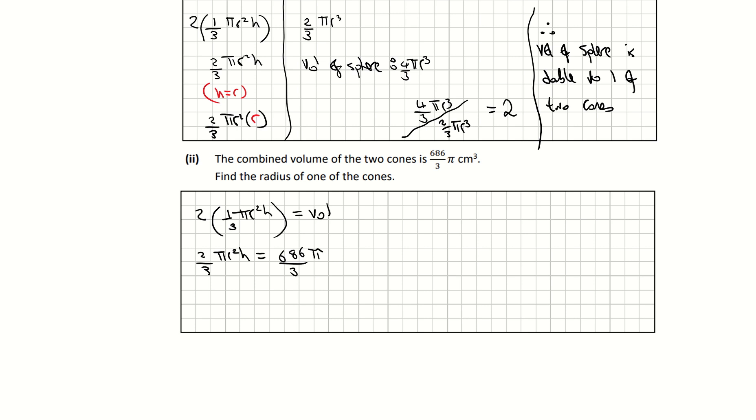I'm now going to substitute in my r for h once again. So that's giving me 2 over 3 pi r cubed is equal to 686 pi divided by 3. In order to isolate the r cubed, I'm going to divide across by 2 over 3 pi. So that's giving me 686 over 3 pi, all divided by 2 over 3 pi. A little bit of calculator work here. That's going to give me r cubed is equal to 343. And then to get r on its own, I need to find the cubed root of 343. And the cubed root of 343 is radius of 7 centimeters. And that's part 2.